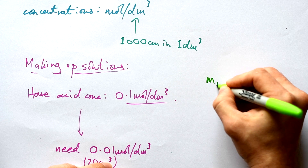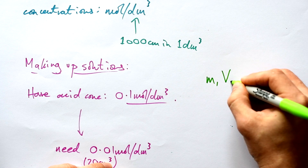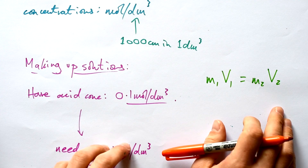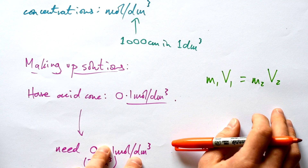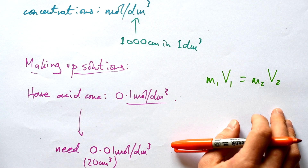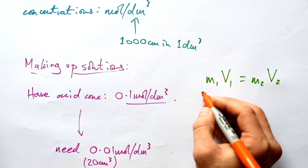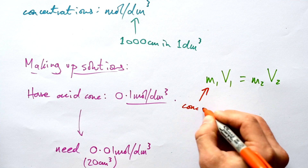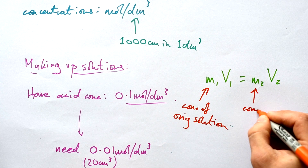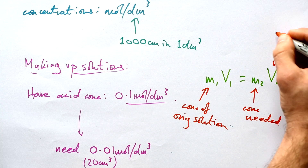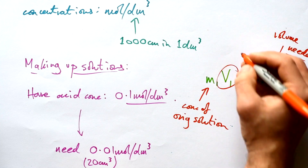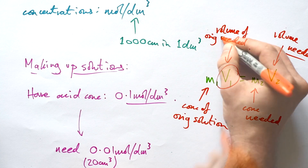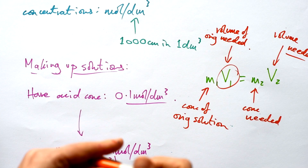Here's a quick equation to remember — you won't be given this: M1V1 = M2V2. M stands for molarity, which effectively means concentration. So M1 is the concentration of the original solution, M2 is the concentration needed, V2 is the volume needed, and we're looking for V1 — the volume of original solution needed.